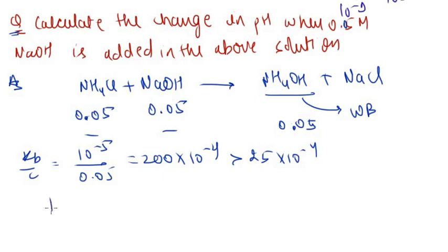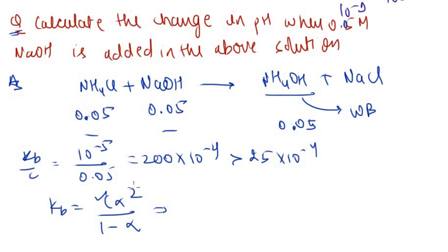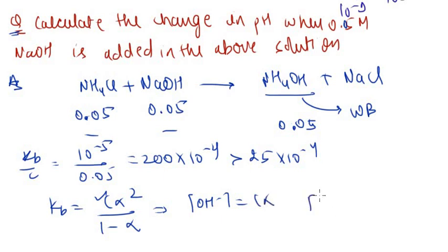Now we have a weak base (NH4OH) at 0.05 M with KB = 10⁻⁵. Checking KB/C = 10⁻⁵ / 0.05 = 2×10⁻⁴, which is greater than 25×10⁻⁴, so we cannot neglect alpha. We use KB = Cα² / (1−α). With C = 0.05 and KB = 10⁻⁵, solve the quadratic for alpha, then find [OH⁻] = Cα, calculate pOH, and finally obtain pH.